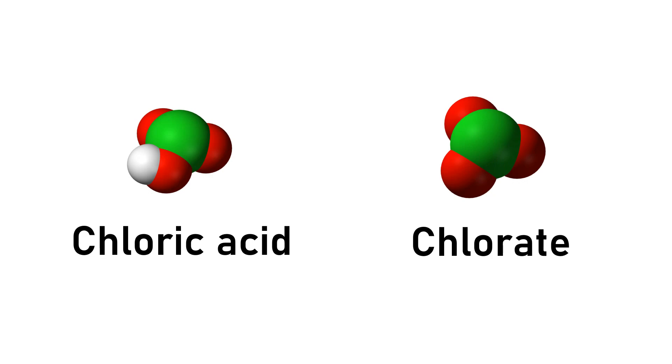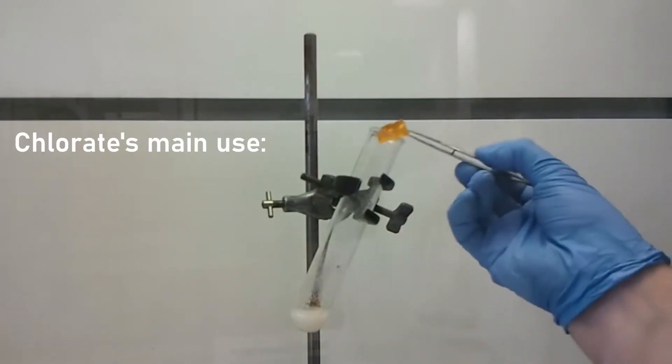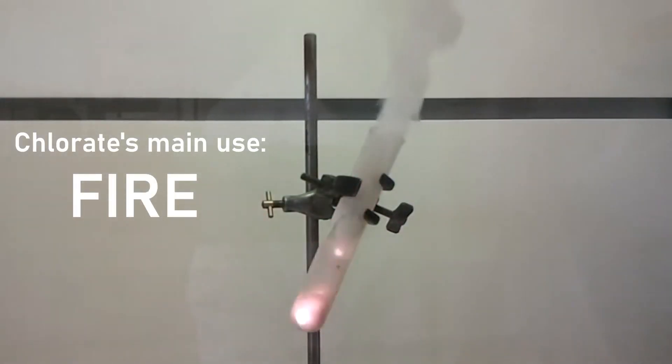To get chloric acid, we first need a chlorate compound. Chlorates don't have a whole lot of uses, and they aren't super accessible unless you have an electrolysis cell, or like me, a whole bunch of matches.